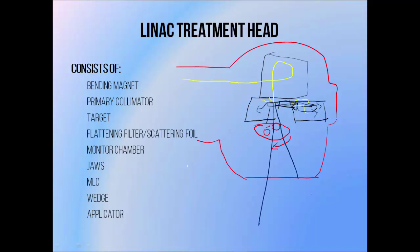The beam then passes through a monitor chamber, which is a radiation detector that allows us to determine how much radiation is leaving the treatment head. This allows us to choose a dose to deliver to our patient, and after the machine has measured a certain amount leaving the treatment head it will turn off. Beneath this we collimate or shape the field with a set of jaws or mobile radiation shields, and depending on the machine design we might also shape the field further with a multi-leaf collimator or an electron applicator.